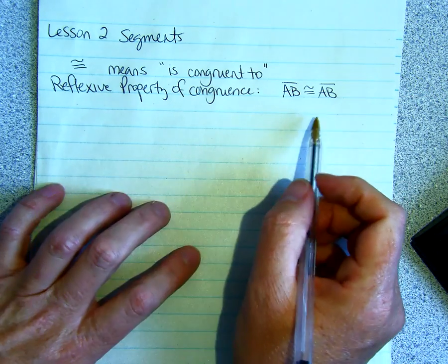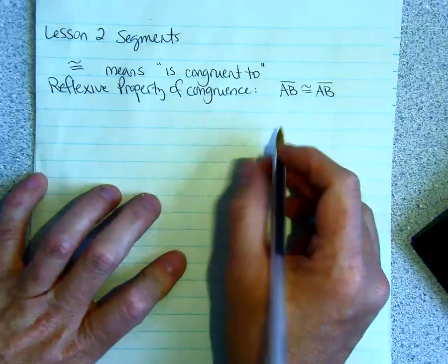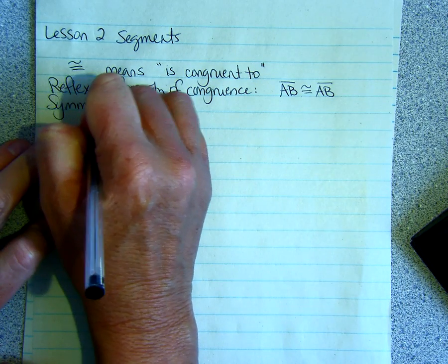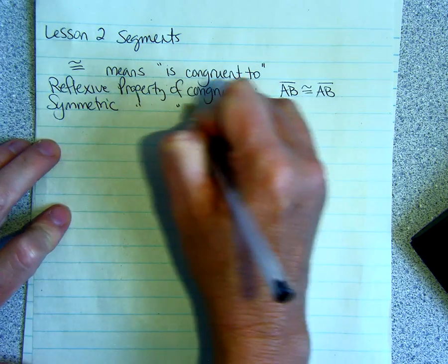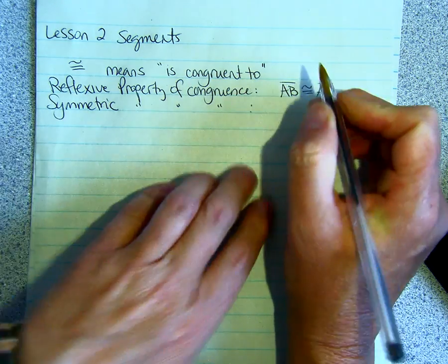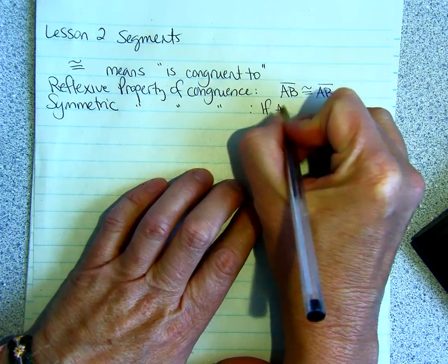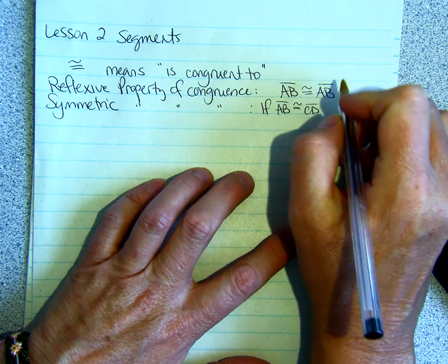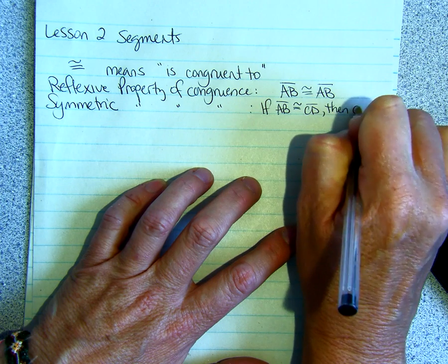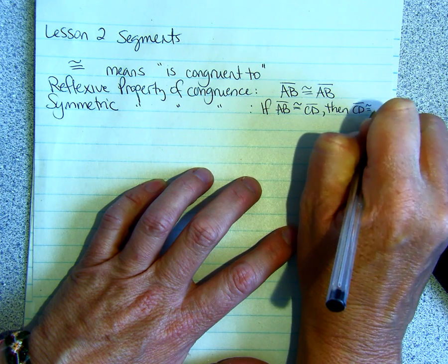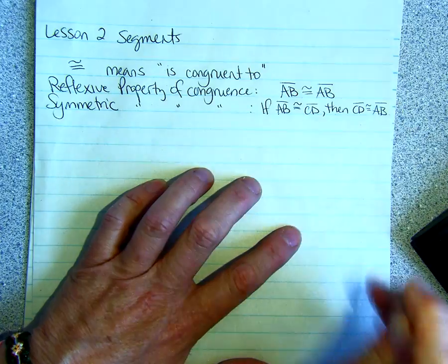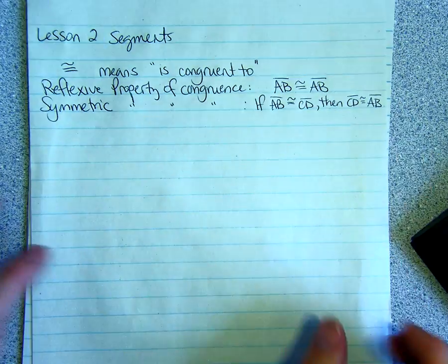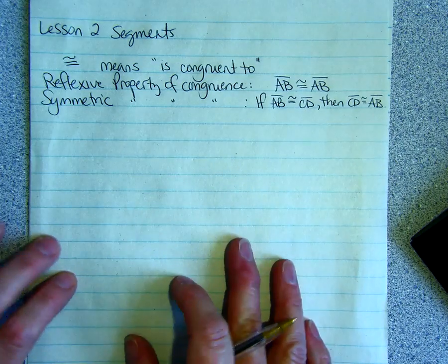That's just called the reflexive property. It's like a reflection in the mirror. The symmetric property of congruence is if segment AB is congruent to segment CD, then segment CD will be congruent to segment AB. That just says you could switch sides on the congruent sign and it's still congruent. That's symmetric.